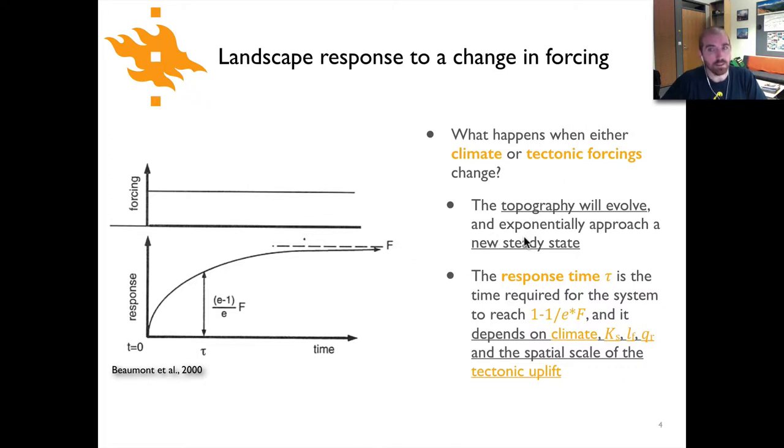The expectation is that the change in topography will exponentially approach a new steady state. This brings up the idea of the response time, which is something we've seen previously when we talked about characteristic times in the context of diffusion, in particular the heat conduction equation. We talked about this characteristic time as the time it takes for the system to reach 1 over e of the change in what's been applied, or in this case about 85 percent of the way. You can see from the relationship here it's basically 1 minus 1 over e times f.